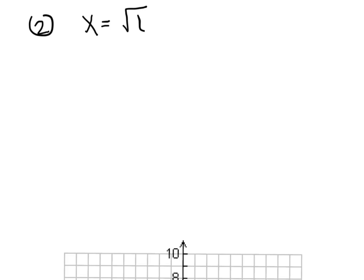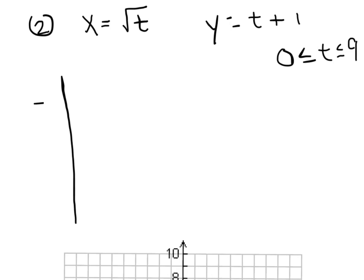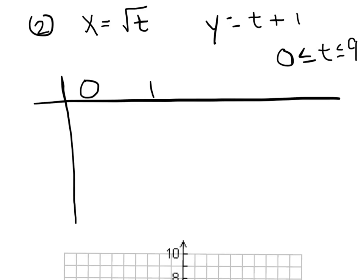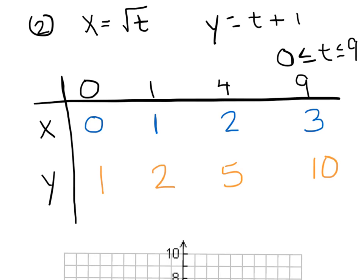For the second example, we have x equals the square root of t and y equals t plus 1, with the interval from 0 to 9 for t. We're going to cheat a little and within that interval only pick perfect squares, because x is defined as radical t, to keep things clean and friendly. So we let t equal 0, 1, 4, and 9. My x values were 0, 1, 2, and 3. My y values were 1, 2, 5, and 10.